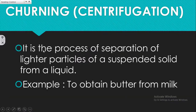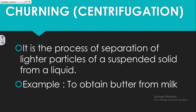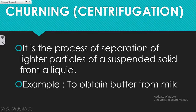Now you are going to see the separation method called churning. It works under the principle of centrifugation. It is the process by which lighter particles of a suspended solid are separated from a liquid. For example, it is used to separate butter from milk.